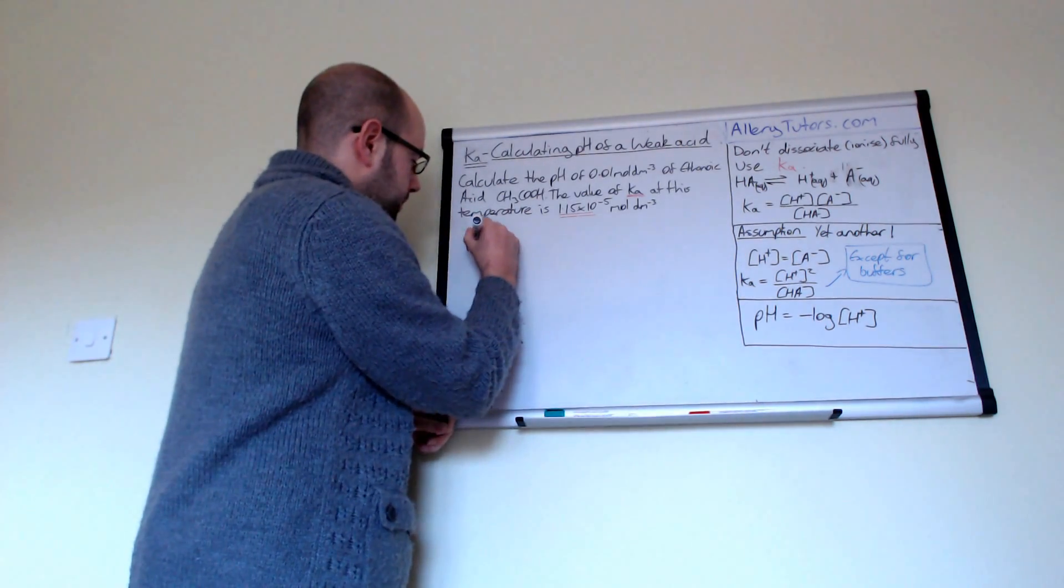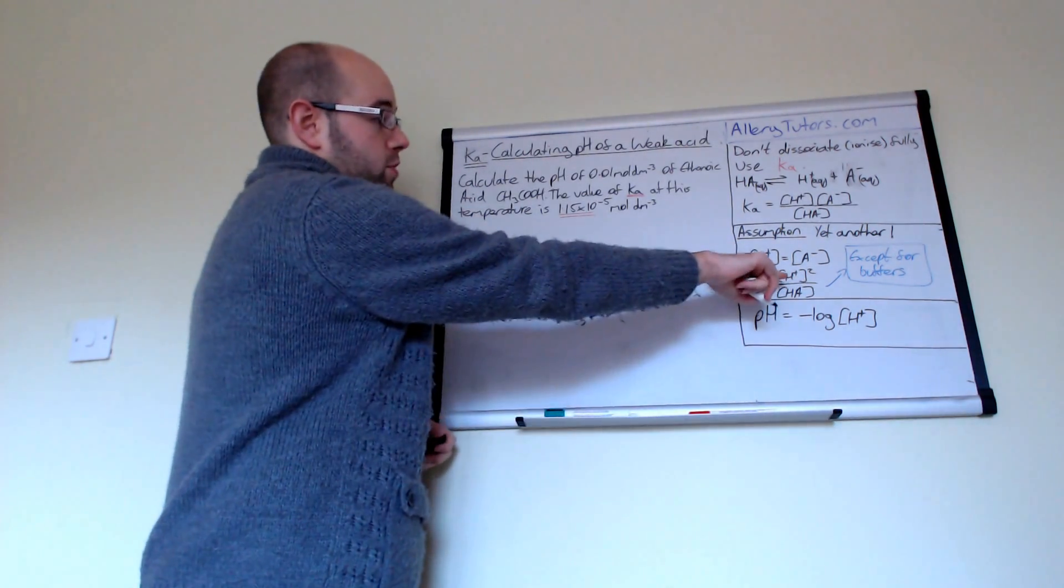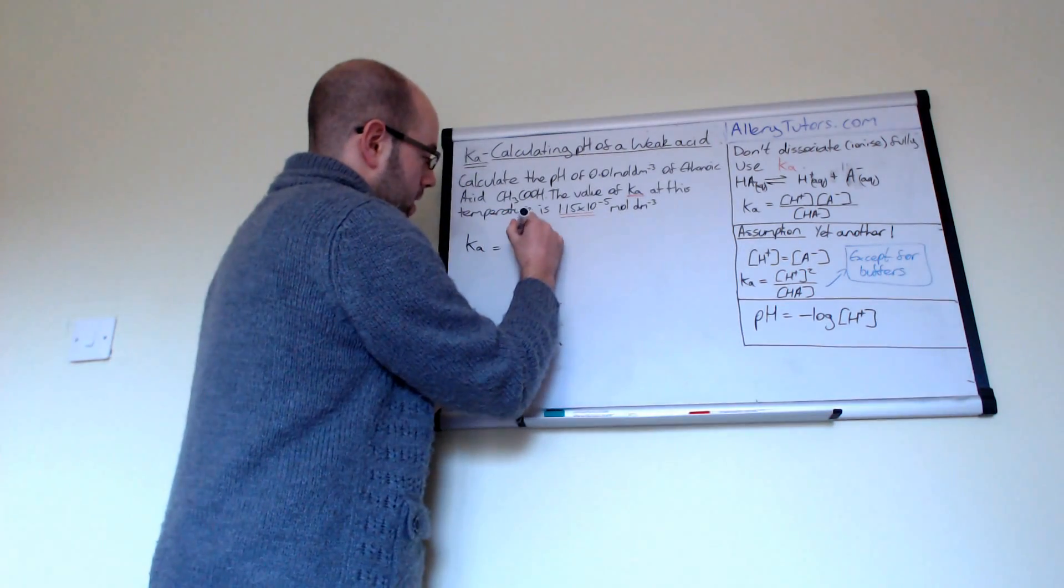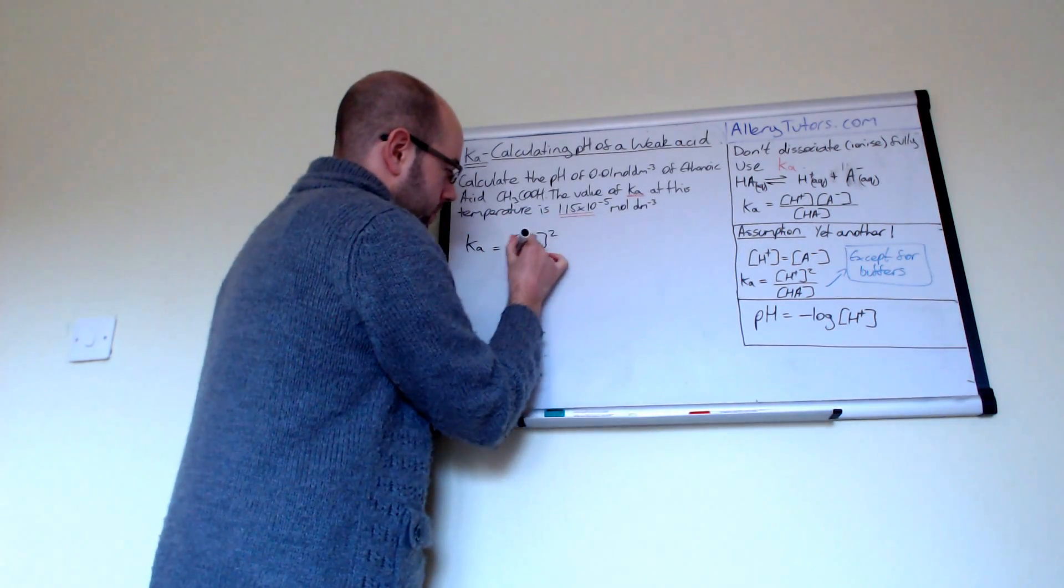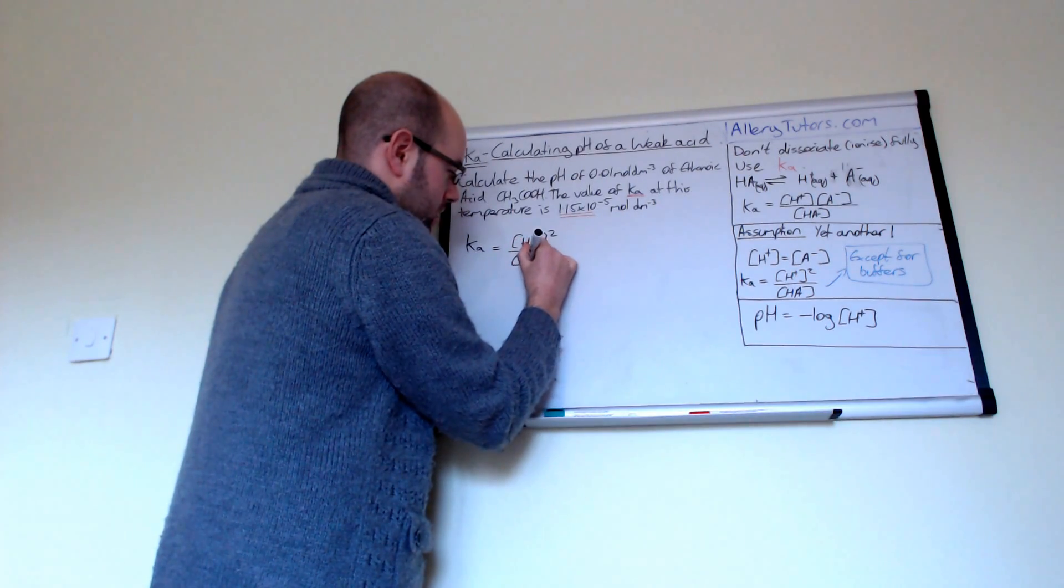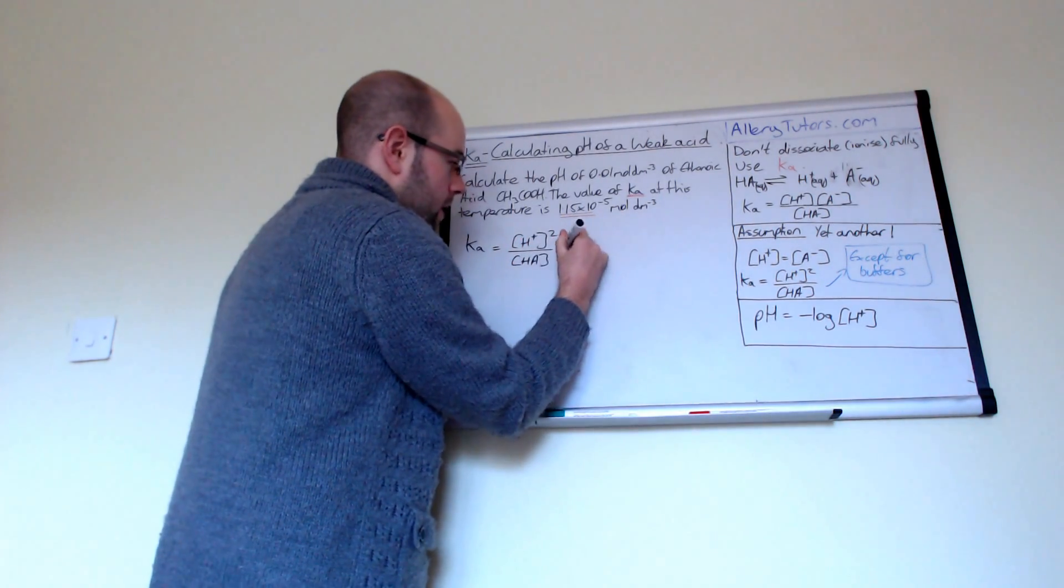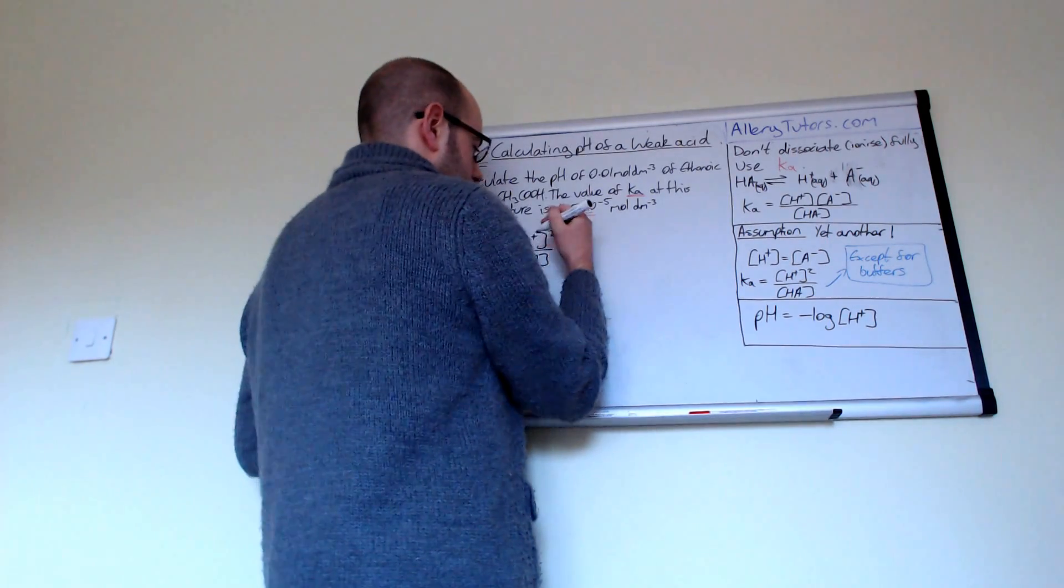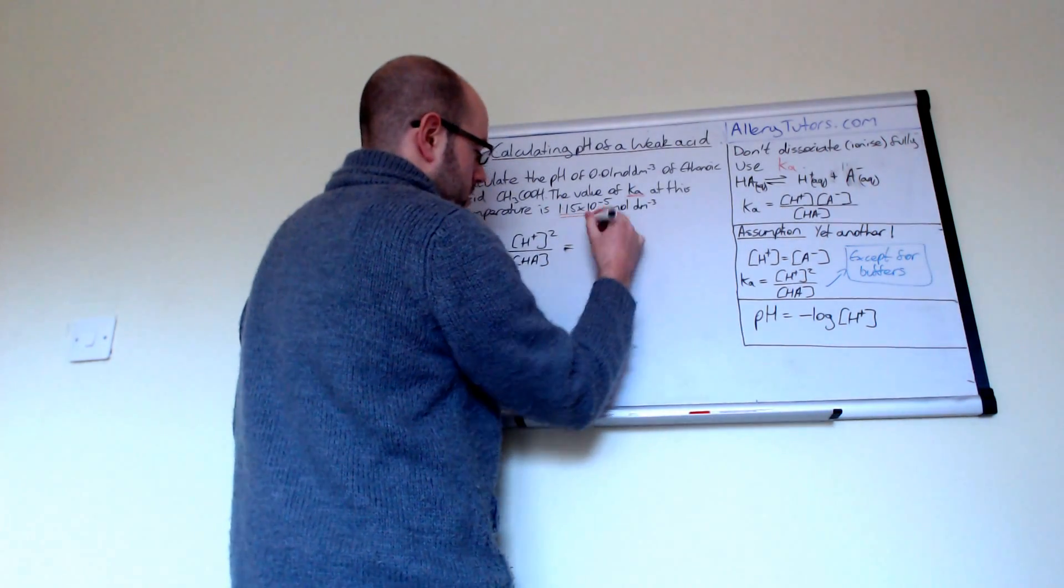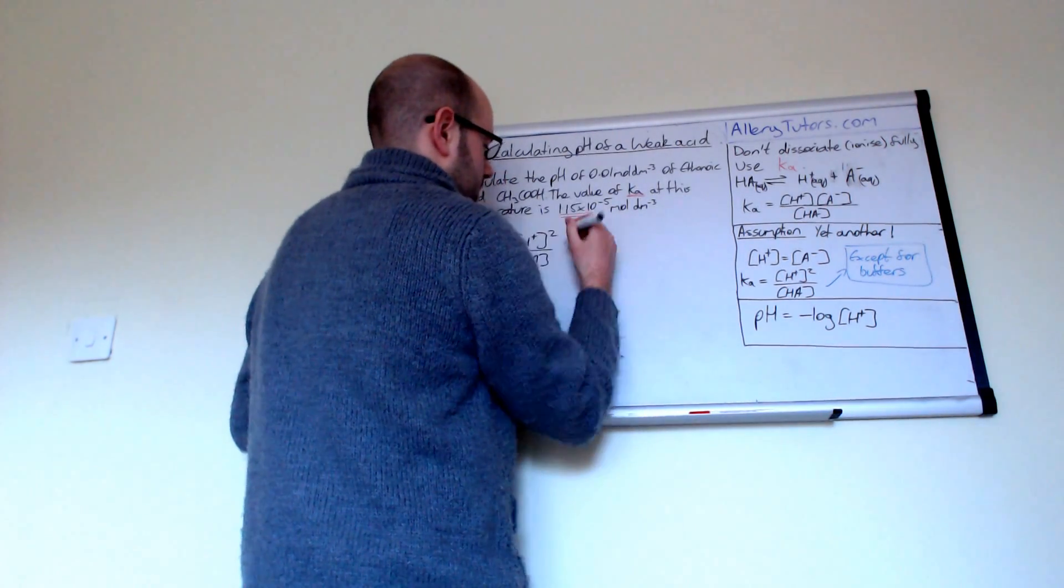So Ka, and we're going to write down the assumption form. So Ka equals the concentration of H plus squared divided by the concentration of HA. So that's our generic form. And if we had to write that in a specific form, then we can say that the concentration, we can say that, let's put this over here, that the Ka value